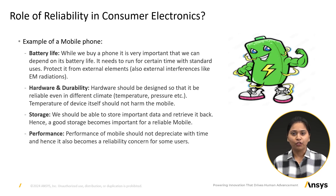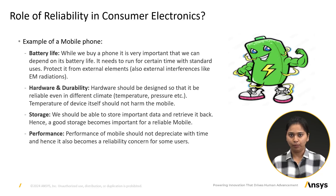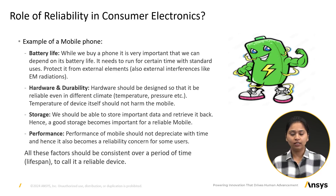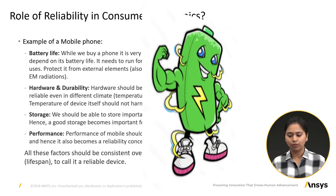Performance: the performance of a mobile phone should remain consistent over time. Often we observe mobile phones lagging during simple operations as they age. For a mobile phone to be considered reliable, all the above factors need to remain consistent over a certain period.